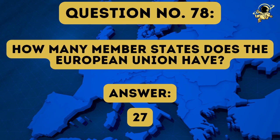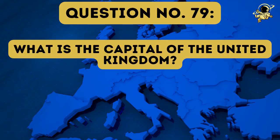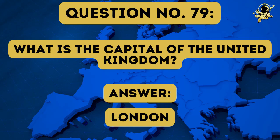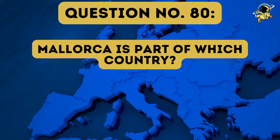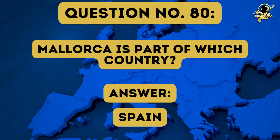It was twenty-eight but then Brexit happened and the UK left the European Union. Question number seventy-nine: What is the capital of the United Kingdom? The answer to question number seventy-nine is of course London. Question number eighty: Mallorca is part of which country? And the answer to question number eighty is Spain.